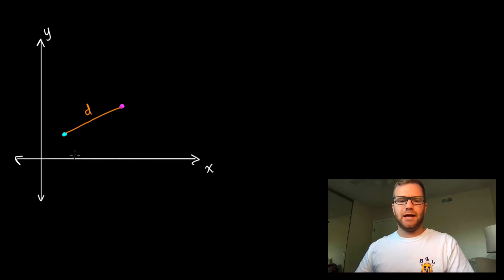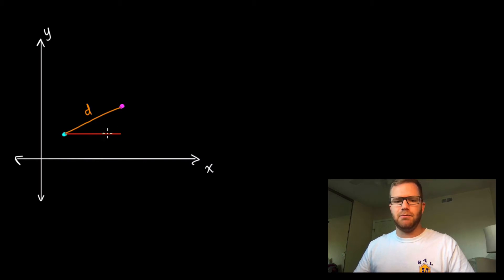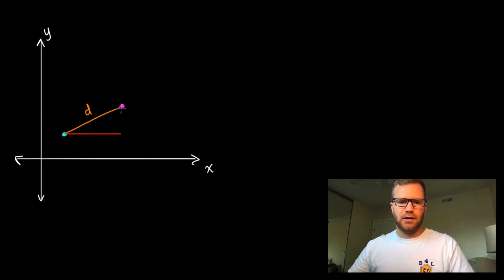In order to use the Pythagorean Theorem, we first need to have a right triangle. To do that, we need to know this horizontal distance — how much we move horizontally from one point to the other — and we need to know this vertical distance, which is the amount we move vertically to get from one point to the other.